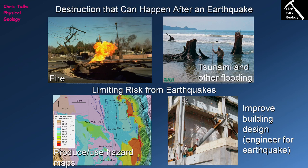This method of mitigating earthquake risk is only really available to countries that have enough money to do it. Poorer countries unfortunately often don't have the capacity to improve building design in ways that increase earthquake resistance. It's always helpful when countries with more resources help poorer countries reduce the risk of earthquake damage. Thank you for watching everybody and have a good day.